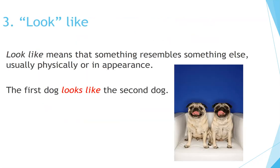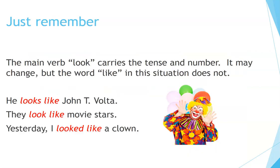Number three: Look like. Look like means that something resembles something else, usually physically or in appearance. For example: The first dog looks like the second dog. Just remember, the main verb look carries the tense and number — it may change, but the word like does not. Examples: He looks like John Travolta. They look like movie stars. Yesterday I looked like a clown.